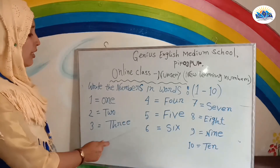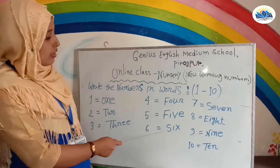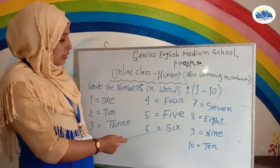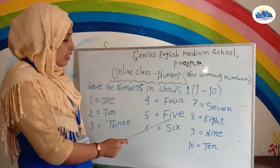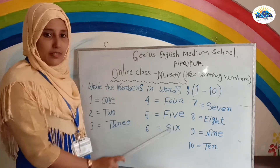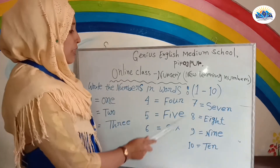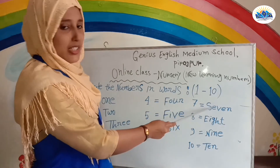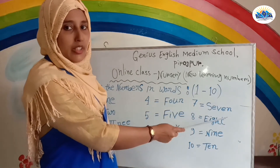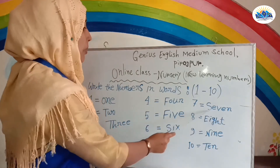Number six: S-I-S. Six. Number seven: S-E-B-N. Seven.